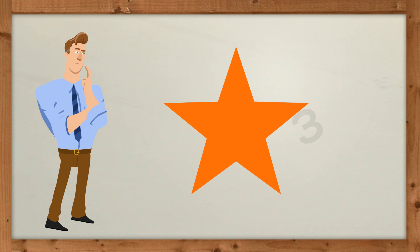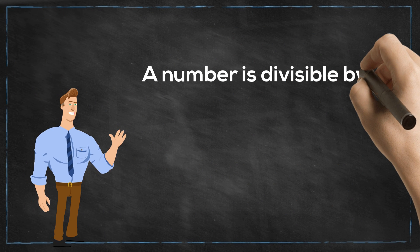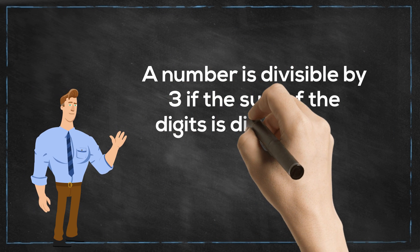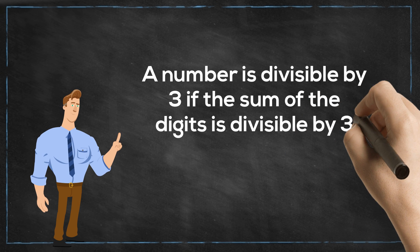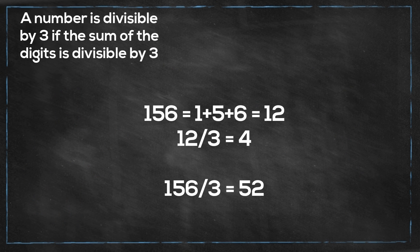Next we have the number 3. The rule for 3 is: any number is divisible by 3 if the sum of the digits is divisible by 3. For example, 156 — add 1 plus 5 plus 6, that equals 12. 12 is divisible by 3, so 156 is divisible by 3.